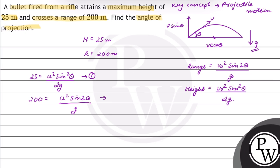So, take this as equation number 2. Divide equation 1 by 2, so this will be equal to 25 by 200 equals sin theta by 4 cos theta. This will be equal to 1 by 2 equals tan theta. Therefore, theta will be equal to tan inverse 1 by 2.